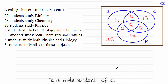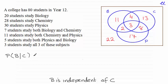One way — and I believe this to be the best way for this type of question — is to look at the probability of a student doing biology given that they do chemistry, and compare that to the probability that they do biology. If those probabilities are exactly the same, then B will be independent of C. It won't matter that the student does chemistry.